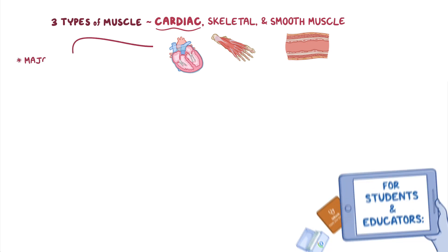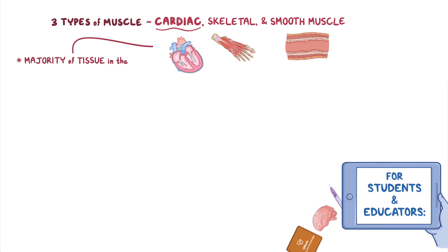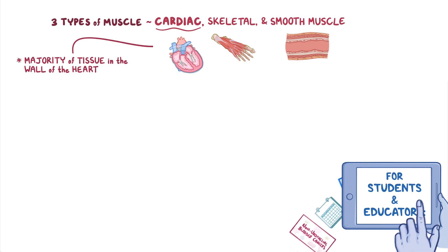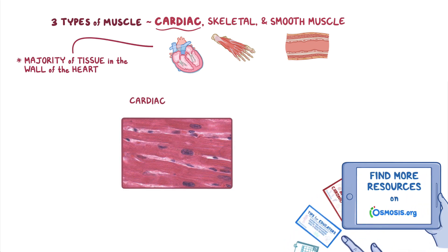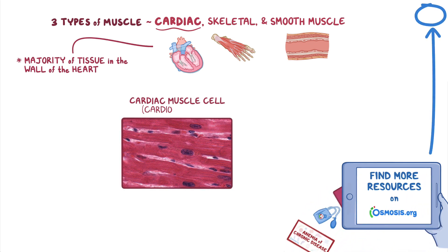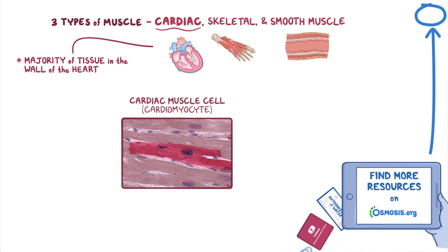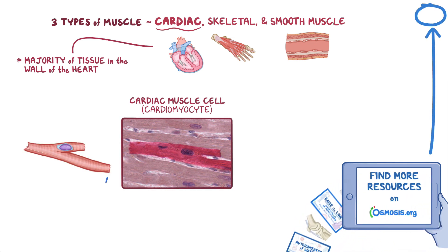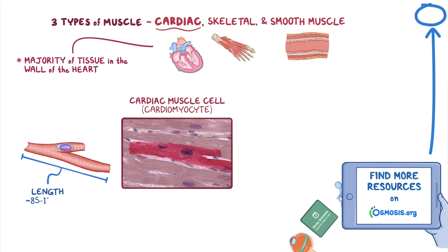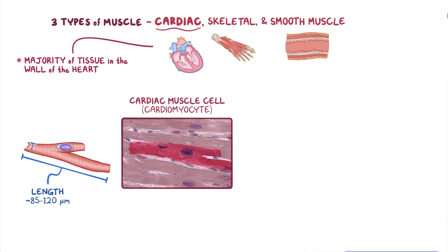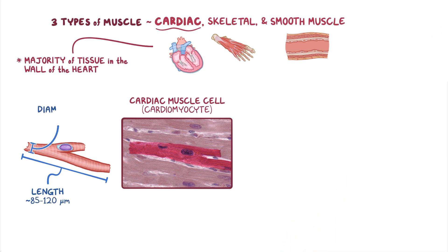Cardiac muscle makes up the majority of tissue found in the wall of the heart. Each mature cardiac muscle cell, or cardiomyocyte, is relatively short, with a length approximately 85 to 120 micrometers long, and a diameter approximately 15 to 30 micrometers.